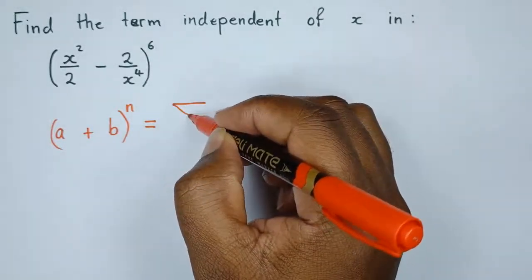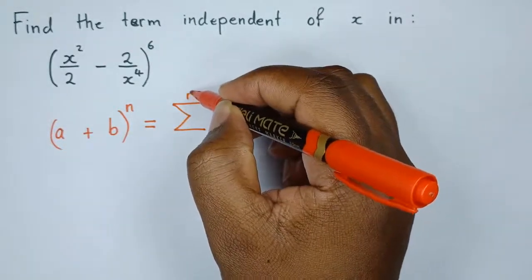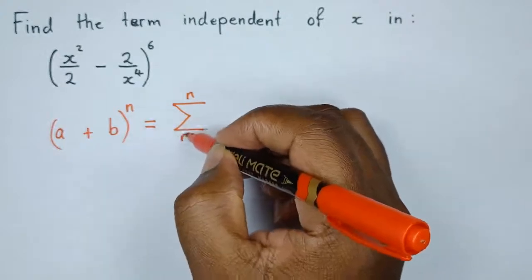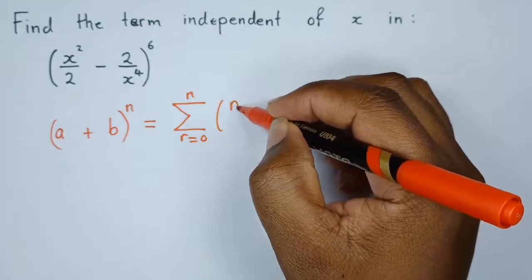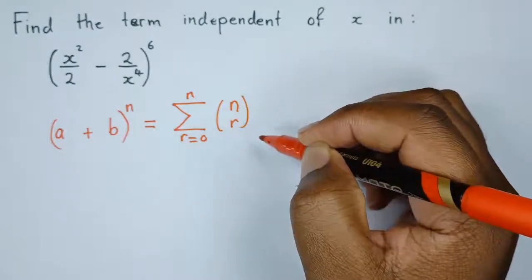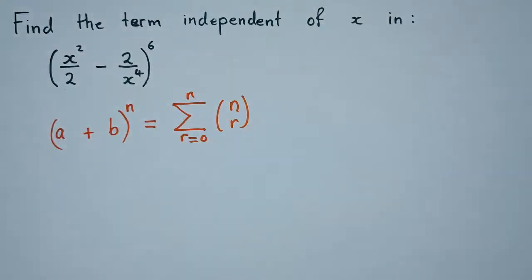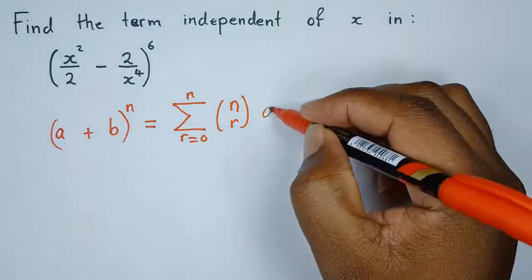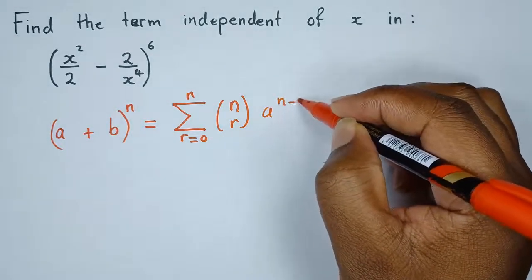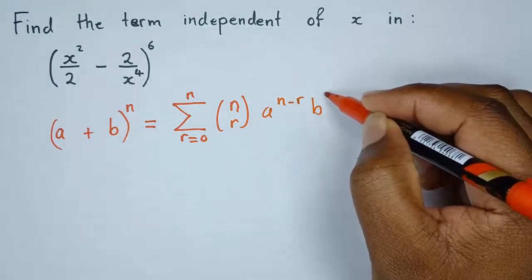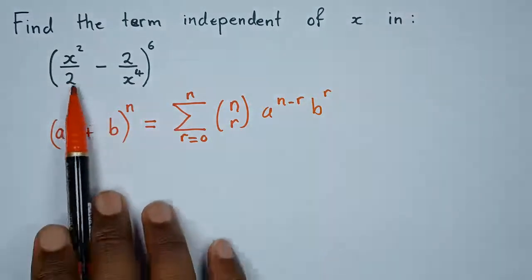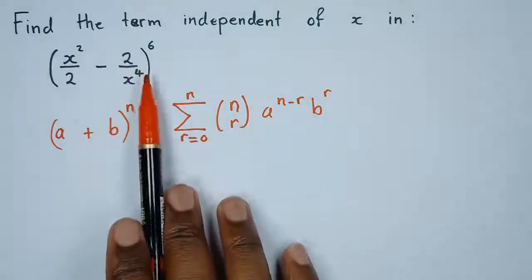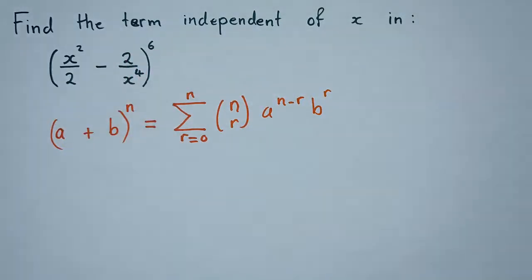The formula to use will be the summation from 0 to n, then the combination C(n, r), multiplied by a to the power (n minus r), multiplied by b to the power r. It's important to note that our a is the first term and our b is the second term in the expression, where n is simply 6.